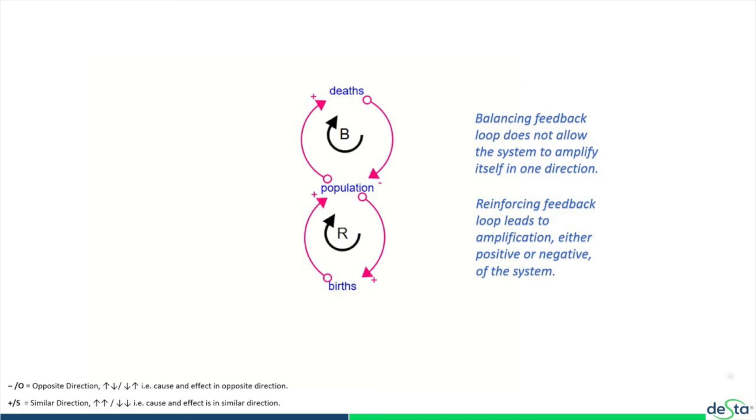Reinforcing loop leads to amplification both ways, either upwards or downwards. And a balancing loop keeps the system in check and applies the checks and balances into a system, and often does not allow the system to move in one direction.